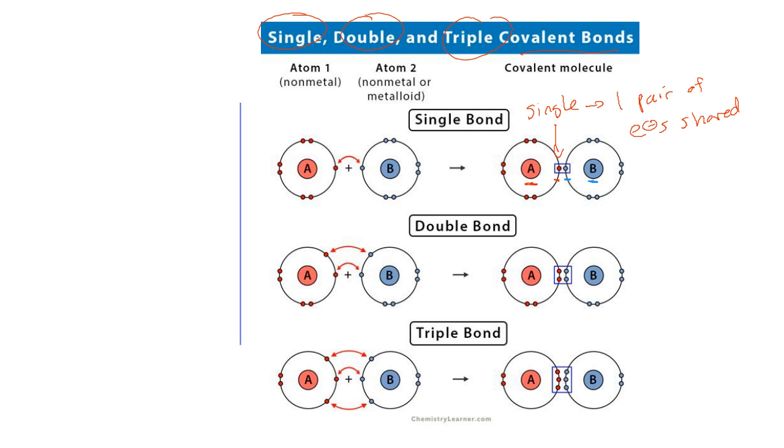Sometimes you'll see a double bond, a double covalent bond. Some occasions you'll see this a lot in fats, for example. Double covalent bond - why? Because now there's two pairs of electrons being shared.